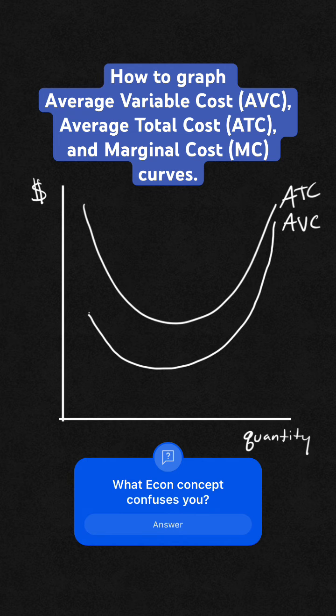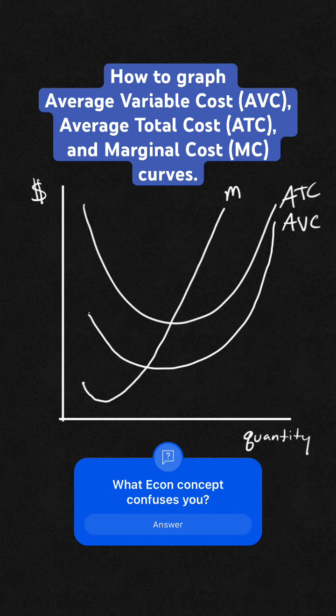Now, marginal cost, I like to tell my students it's a Nike swoosh. Starting way down here, it goes down, and it's always going to cross at the minimum AVC and ATC. That's your marginal cost curve.